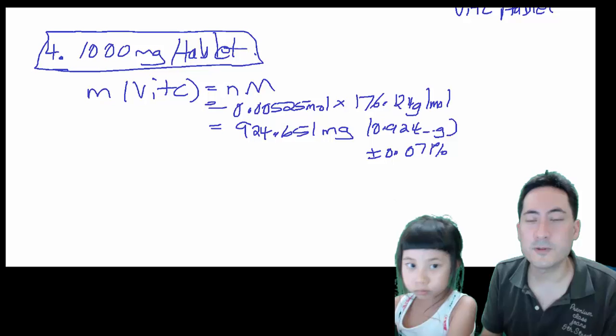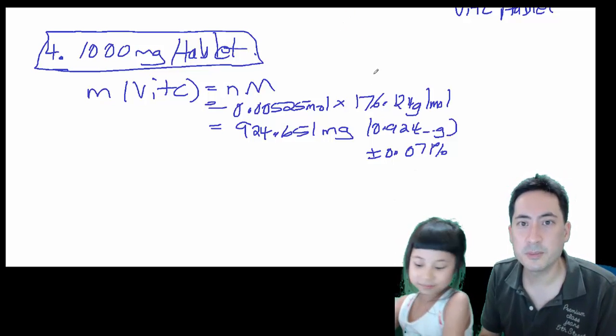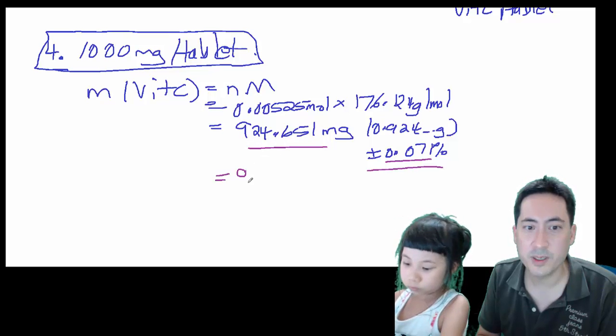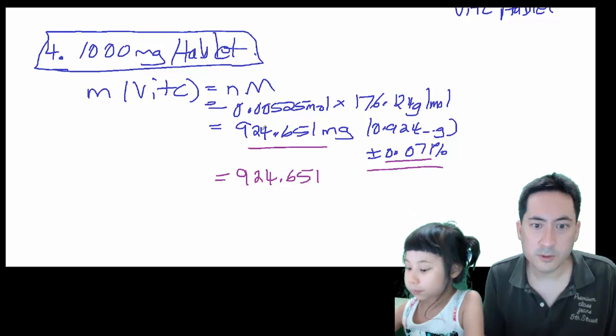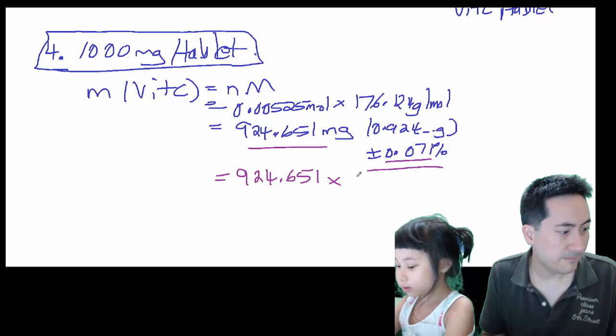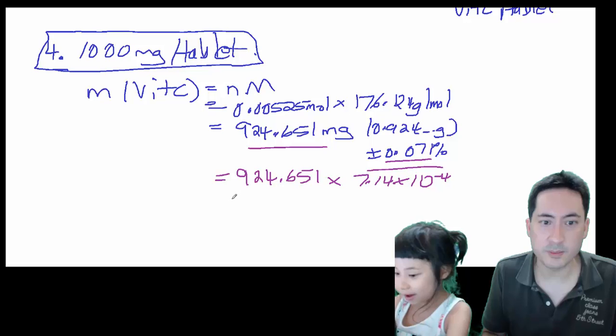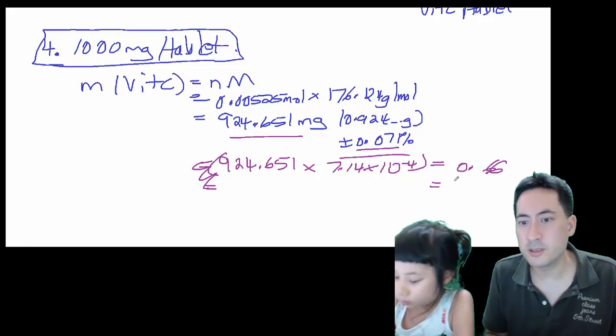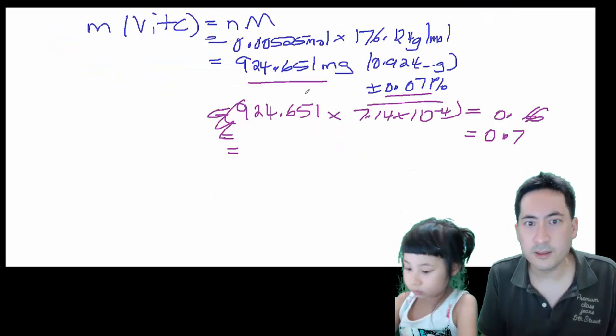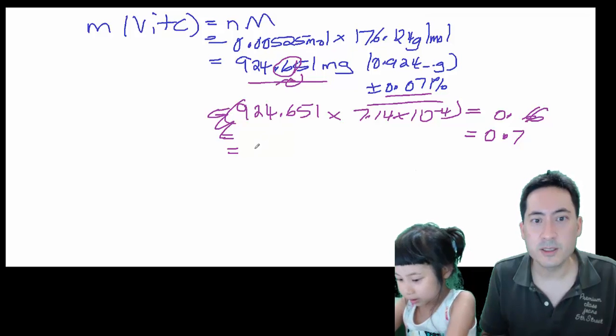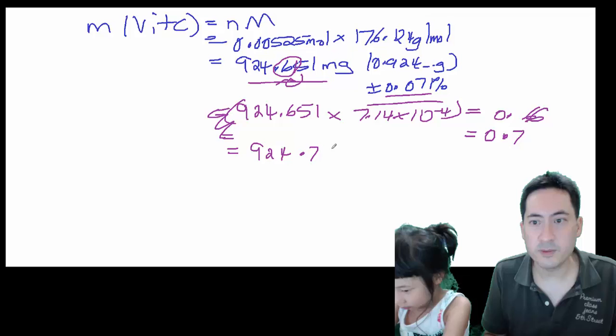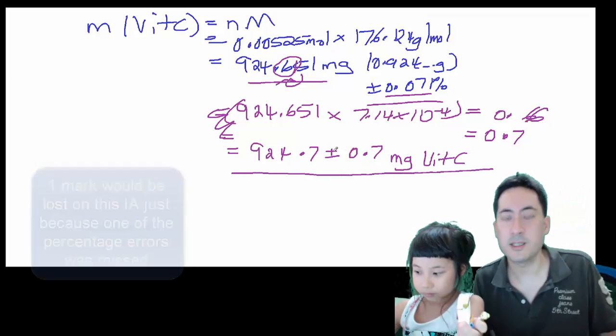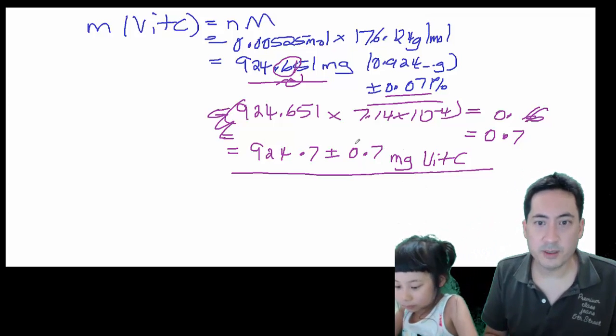All right, so that was 0.924 grams. So let's finish up with our precision then. And so that's our final answer. So I need to times that 924.651 by 0.007%. So 924.651 times 7.14 × 10⁻⁴, that ends up being 0.66. I want to get that to a single digit, so we're going to take that to 0.7. And so our error doesn't go to the smallest digit, which is here, and we'll round that one up as well. So the final answer is 924.7 ± 0.7 milligrams of vitamin C. That's almost done, that's your first answer. That's your first answer and that's our precision, which is pretty high.